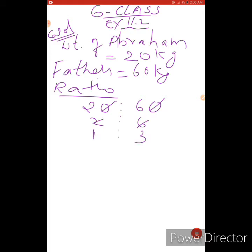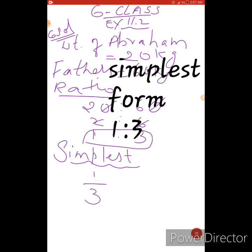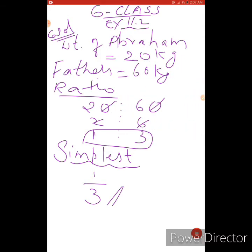So 1:3 is your ratio. We want simplest form. Simplest form is a simple way. 1:3 can be written as 1 by 3. Ratio between father and the Abraham. Is it clear? Thank you. So next problem.